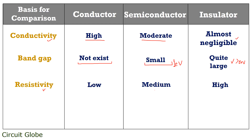Talking about the resistivity of material: conductors possess low resistivity, thus high flow of current takes place through them. Semiconductors offer medium resistivity, while insulators are highly resistive in nature, as very low or almost negligible current flows through them.